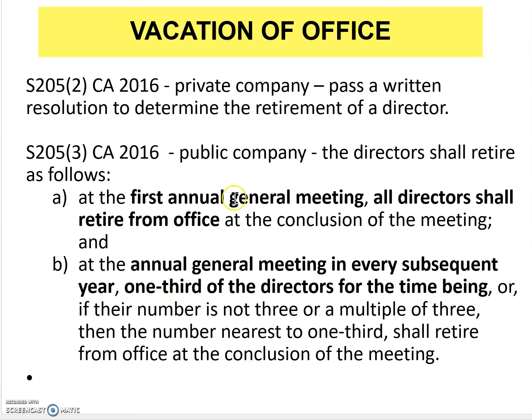During the first AGM, directors who retire can be re-elected or someone else elected. In subsequent years, they take turns to retire. This is done to ensure proper governance and so that directors can bring their own vision on how to develop the company. But this rotation applies only to public companies.